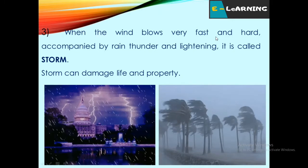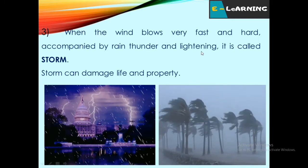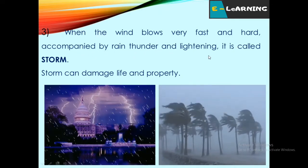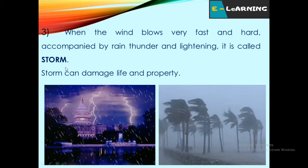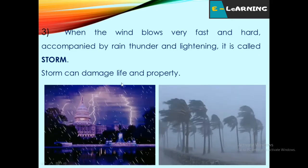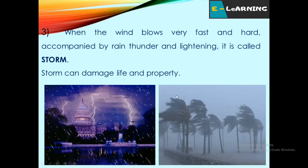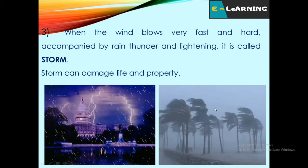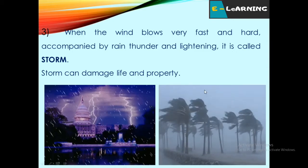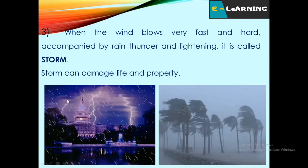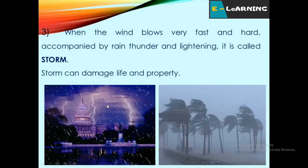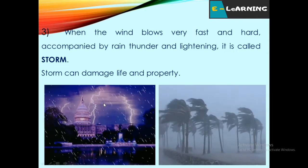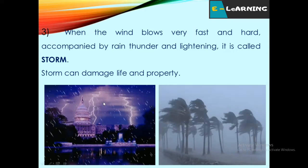When the wind blows very fast and hard accompanied by rain, thunder and lightning, it is called storm. Storm can damage life and property. In this picture, you see the wind blows very fast and hard — it is thundering and raining, so it is called storm.